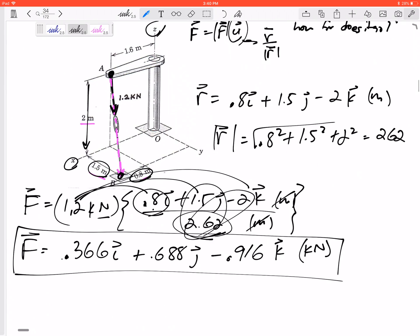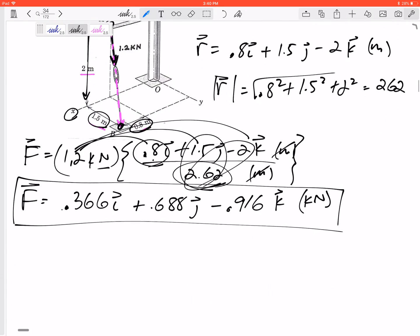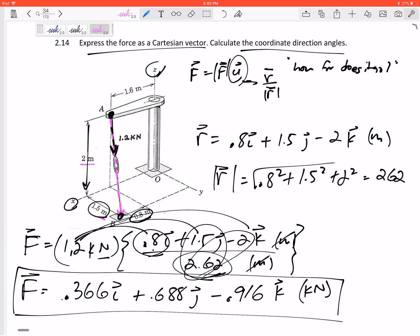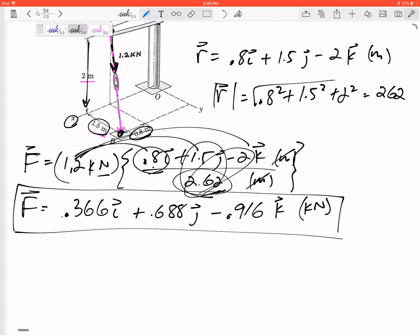So that right there, that's a big part of this problem. We just expressed the force as a Cartesian vector. And now for a lot of these problems they ask for the coordinate direction angles. So I like to forget the figure, forget everything else, forget all this. If I'm given this force, I can calculate its coordinate direction angles. If I see coordinate direction angles or am asked for them, I think F equals Fu, and u is cosine alpha i plus cosine beta j plus cosine gamma k.